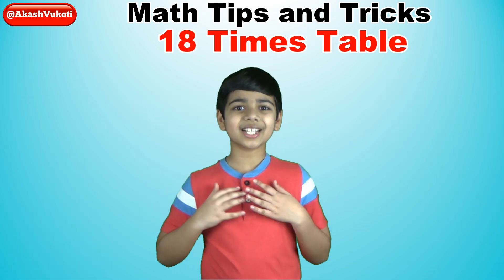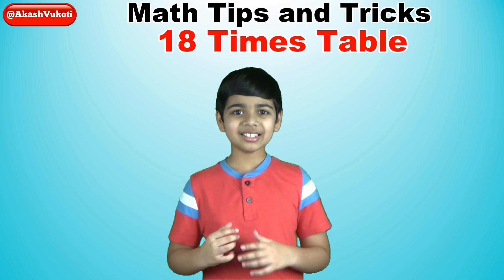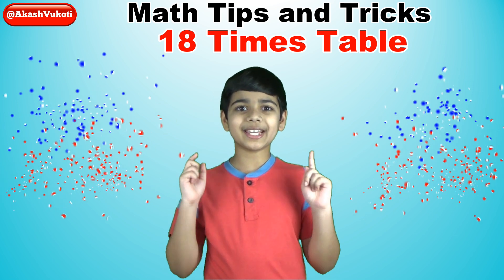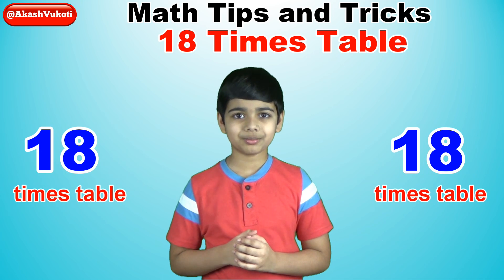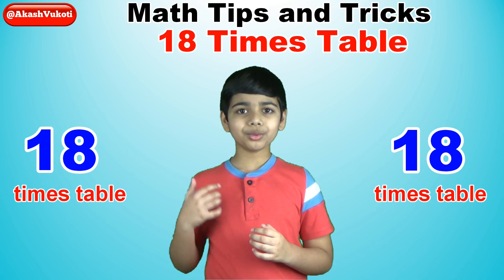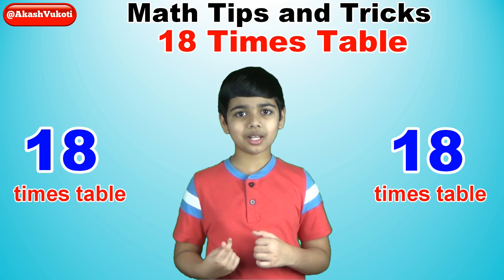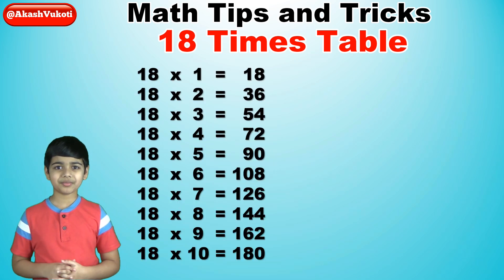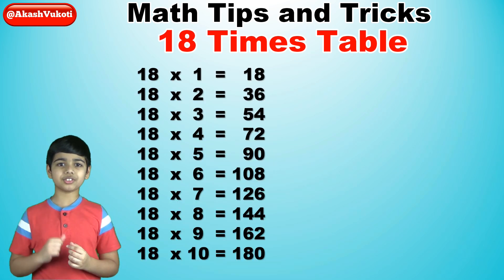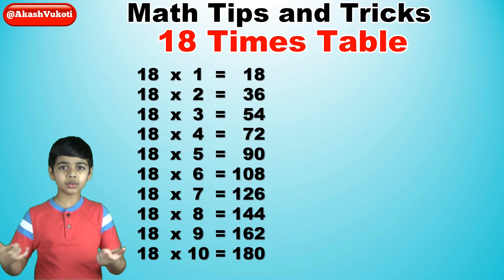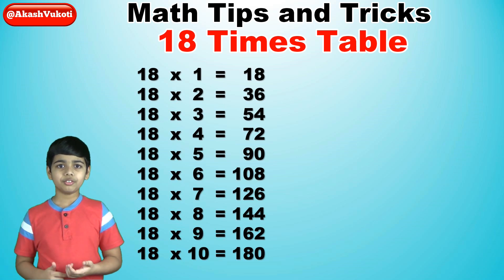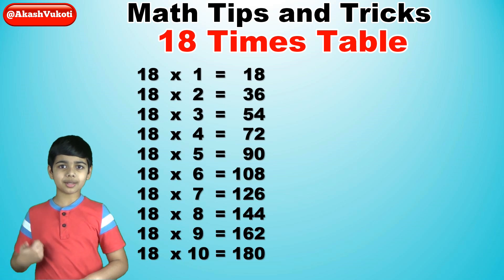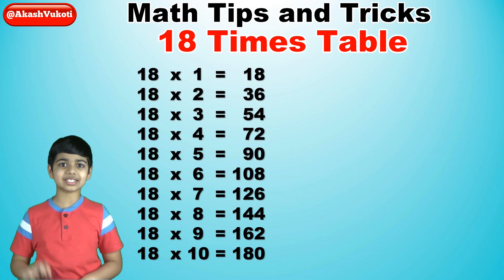Hello friends, I'm Akash. Today I'm going to talk about the trick for the 18 times table. We will recite the 18 times table. First, for the 1s digits, we'll just write the reverse of the 2 times table, from 2 times 4 all the way to 2 times 0. Make sure to do this twice.